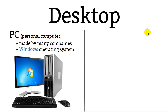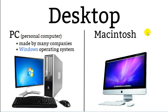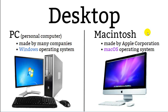Many different companies make personal computers, but they all run the Windows operating system. The other kind of desktop computer is a Macintosh. Macintosh computers are only made by the Apple Corporation — nobody else makes Macintosh. Apple does not use Windows; they use Mac OS. OS stands for operating system, so Mac OS is the Mac operating system.